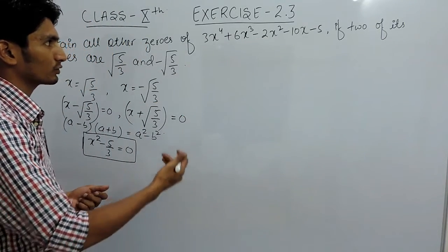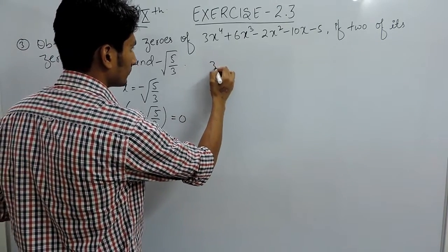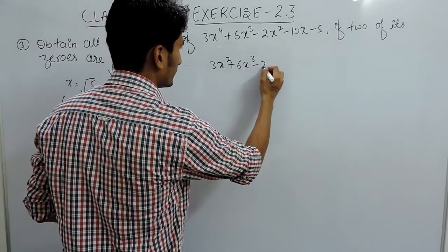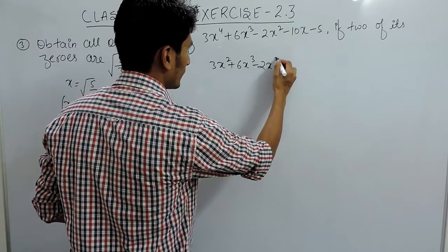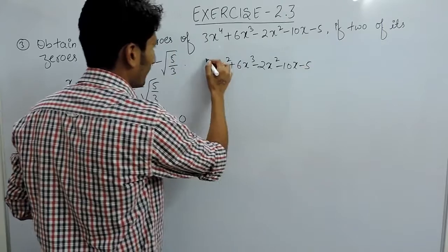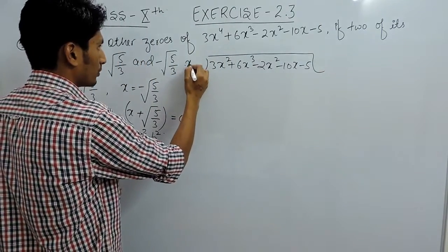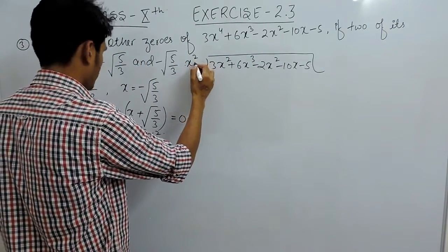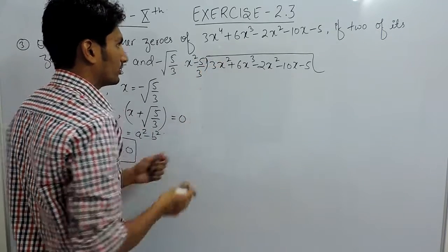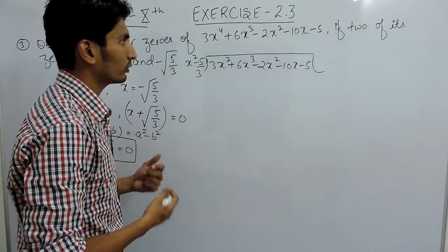We need to find the remaining factor, so for that we have to divide the polynomial 3x⁴ + 6x³ - 2x² - 10x - 5 by the factor (x² - 5/3). Dividing by this factor will allow us to find out the remaining factors.